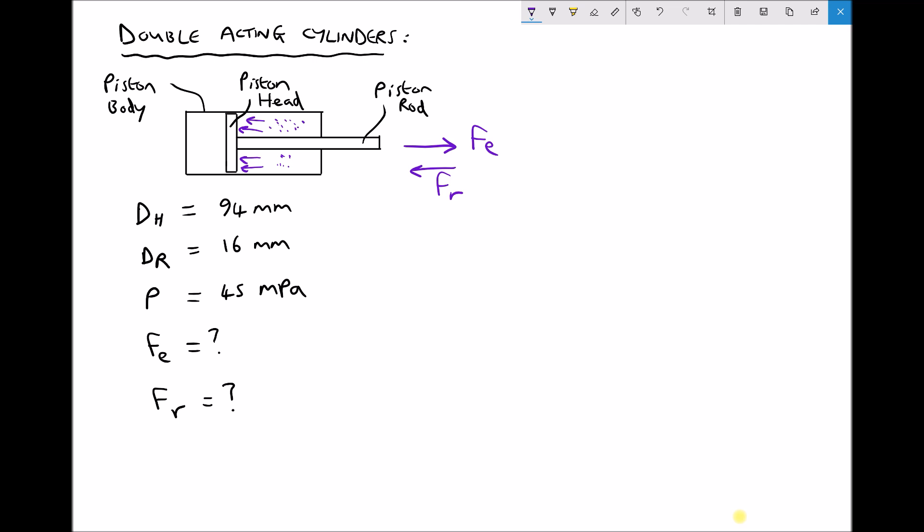The annulus is the area of the piston head minus the area of the piston rod. So hopefully you can see from my illustration that the pressure can only act on this area, which is known as the annulus. Whereas when the cylinder is extending, the pressure can act on the full bore because the piston rod is only present at the front of the cylinder.